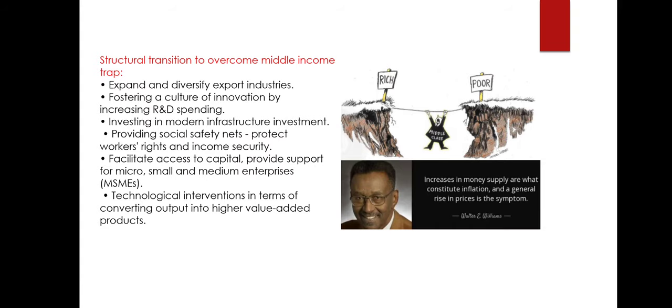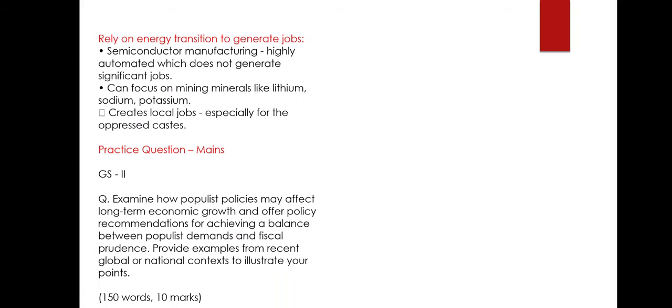In the agriculture sector, technological interventions can increase overall output and help extract high-value-added products. These are steps the government can take to escape the middle income trap. These structural reforms require long-term commitment and a supportive political environment. Instead of putting money in people's hands through non-productive measures — which ultimately results in inflation — the government should focus more on structural changes. Providing employment is more helpful in the long term.